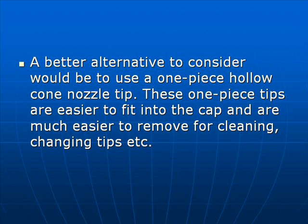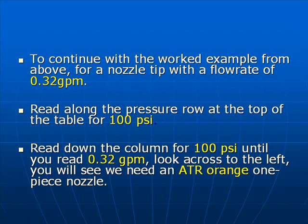A better alternative to consider is the use of a one-piece hollow cone nozzle tip. These one-piece tips are easier to fit and much easier to remove and change. To continue with the worked example, we are looking for a flow rate of 0.32 gallons per minute. Read along the pressure row at the top of the table until you see 100 psi.